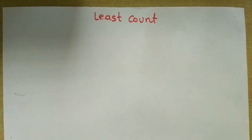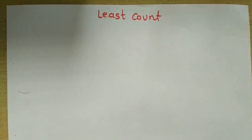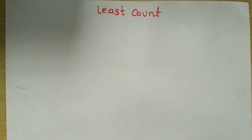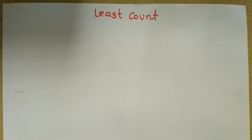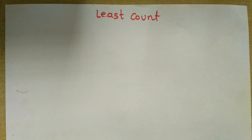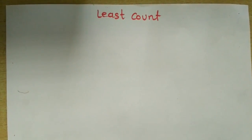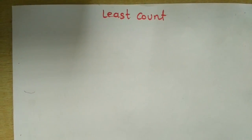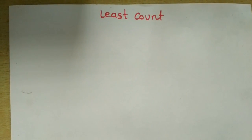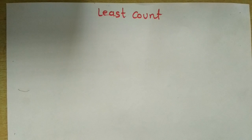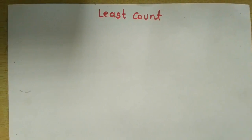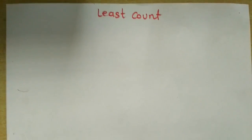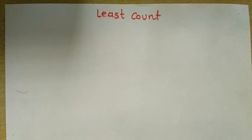Hello guys. Least count is the minimum measurement that can be carried out using an instrument. If you are performing an experiment, you need to find out the least count of the measurement scale. We are going to find the least count of an ammeter and voltmeter.